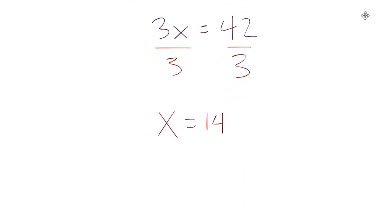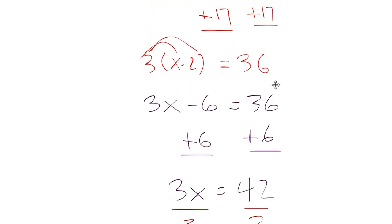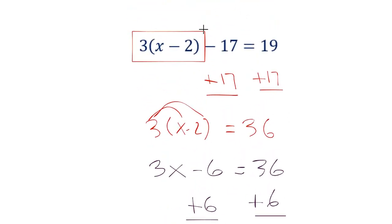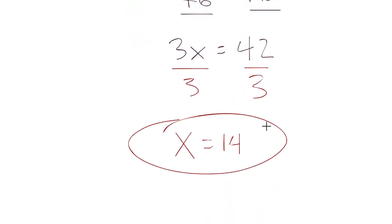Now, again, let's go back and double check, let's see what we get. So if I plug in 14 for x, I get 14 minus 2, that's 12. 12 times 3 is 36. 36 minus 17 is 19. And again, that's a nine. We definitely get a true statement. That's how we know our answer. Our variable is correct. Okay.